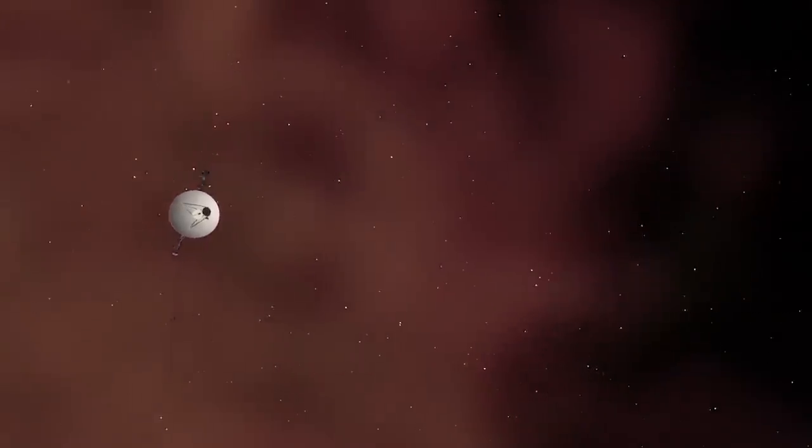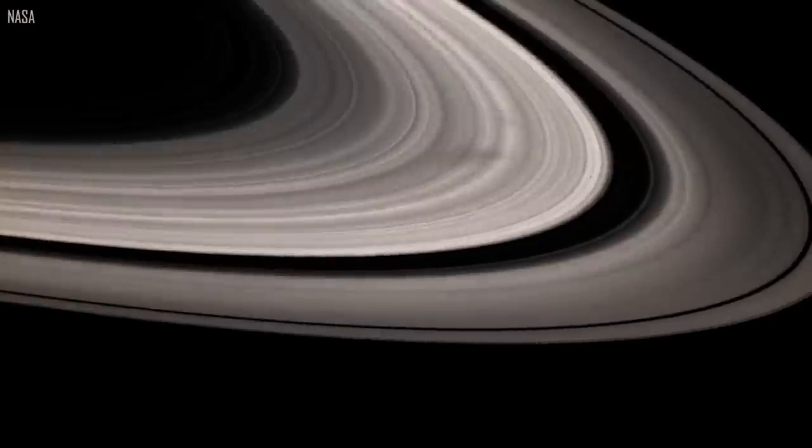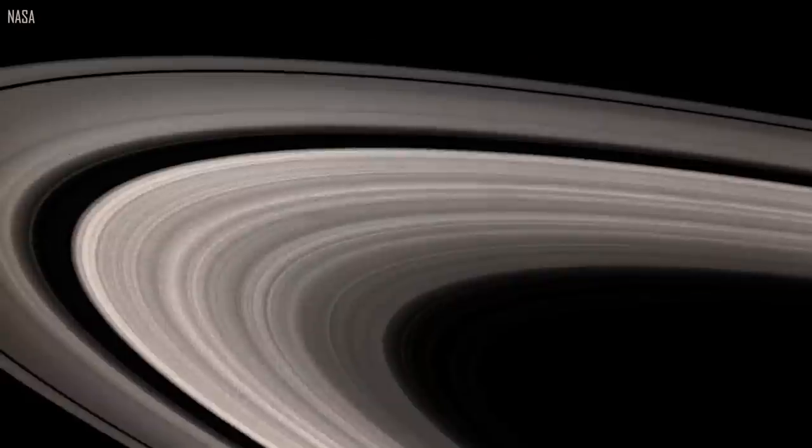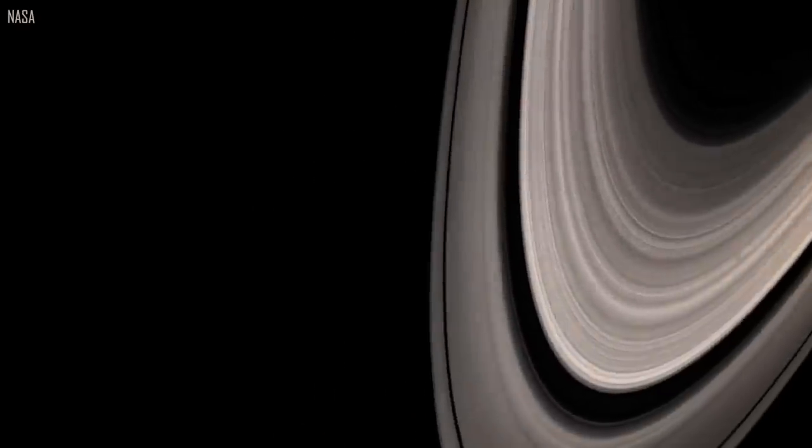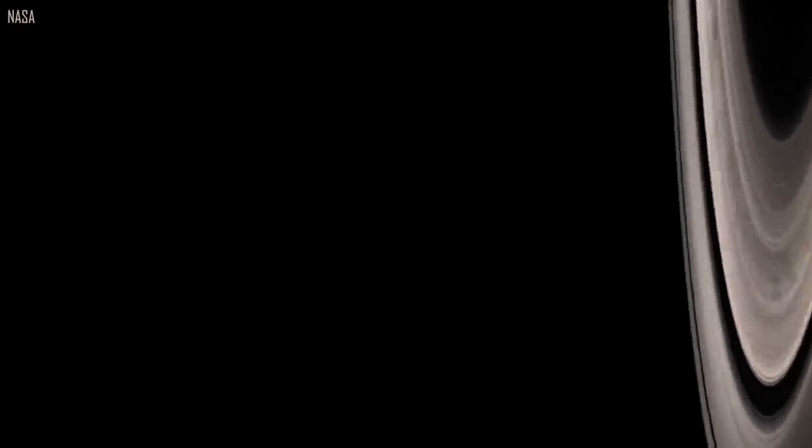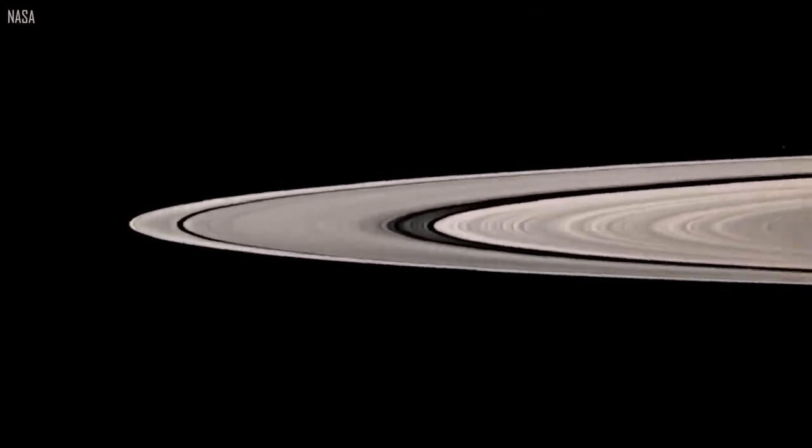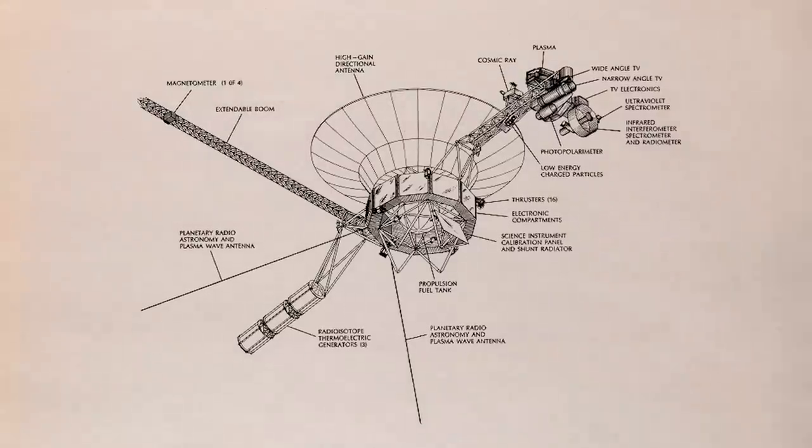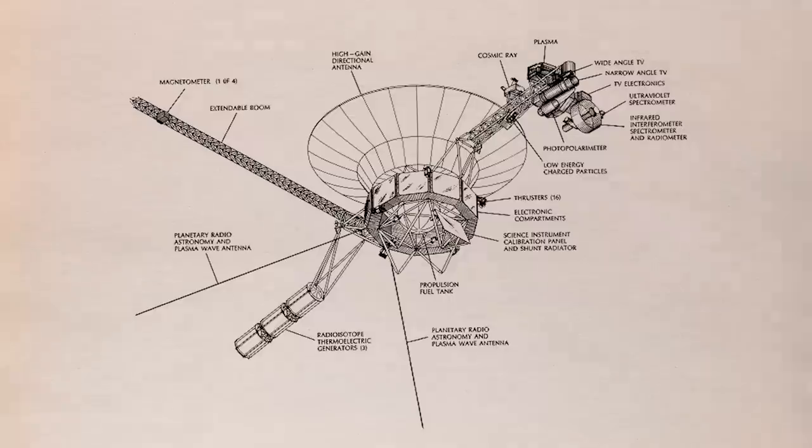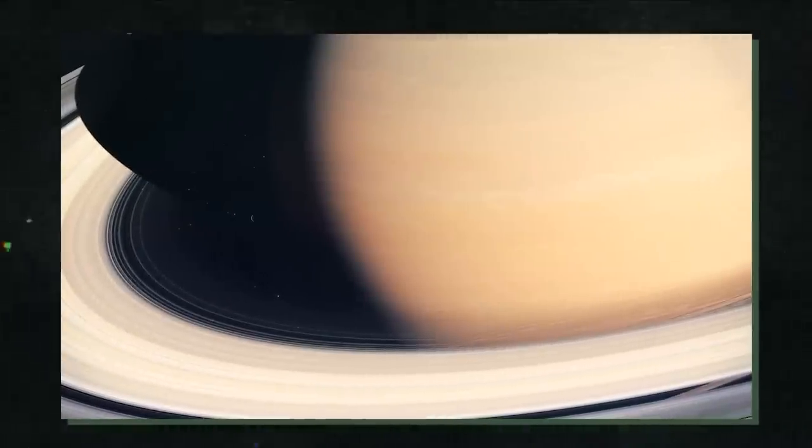The Voyagers, which were approximately the size of a vintage Volkswagen Beetle, needed some onboard intelligence to manage all of these difficulties. As a result, NASA's engineers gave the computers onboard the vehicle 69 kilobytes of memory, less than one hundred thousandth the amount of memory found in a regular smartphone. The smartphone comparison is perhaps a little off. The key fob that opens your car door has more memory than the Voyager computers.